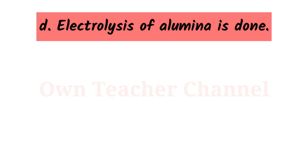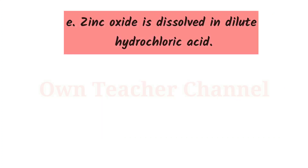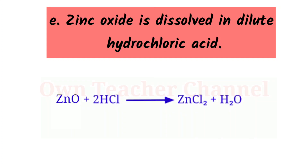Electrolysis of alumina: When electric current is passed through the mixture, aluminium is collected at the cathode in the molten state and sinks to the bottom. Zinc oxide is dissolved in dilute hydrochloric acid: When zinc oxide reacts with hydrochloric acid, it forms zinc chloride and water. This is a double displacement reaction.